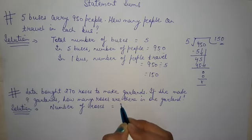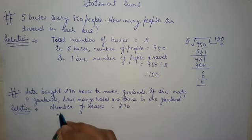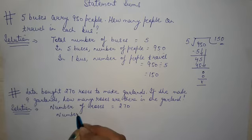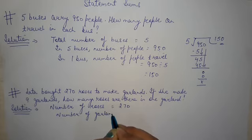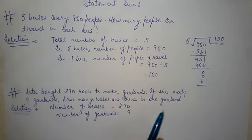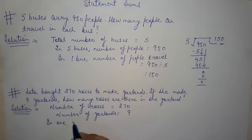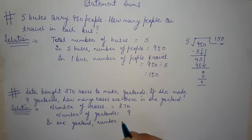One garland equals 270 roses, and number of garlands equals 9. What we need to find is: how many roses are there in one garland? So we'll write: in one garland, number of roses equals to 270 divided by 9.